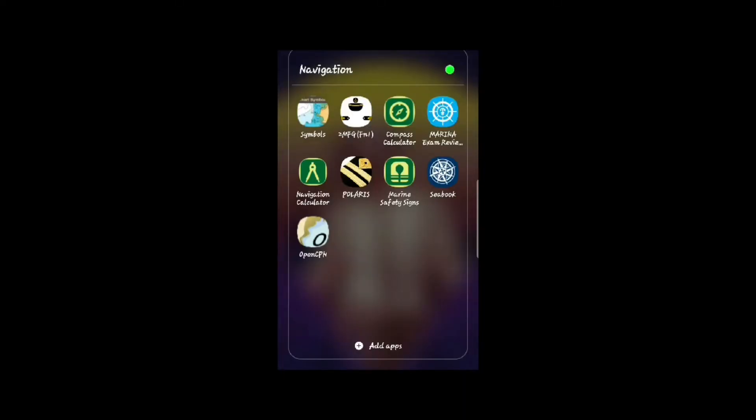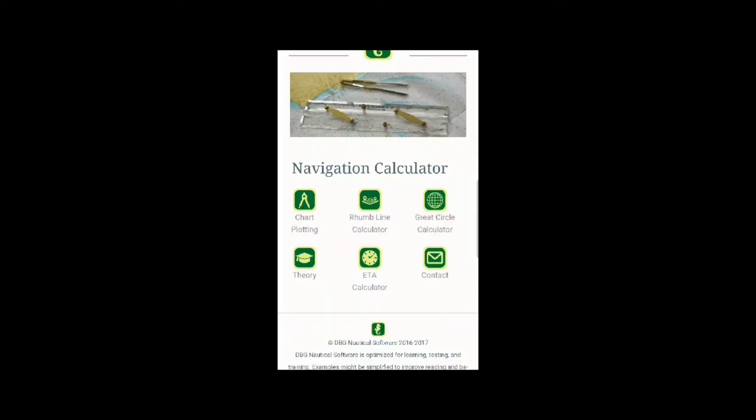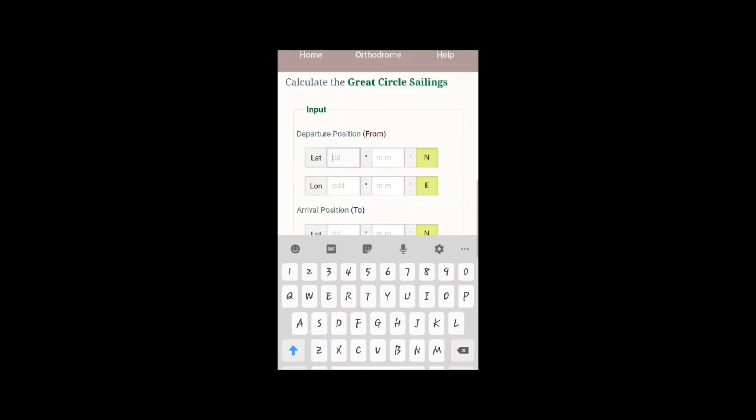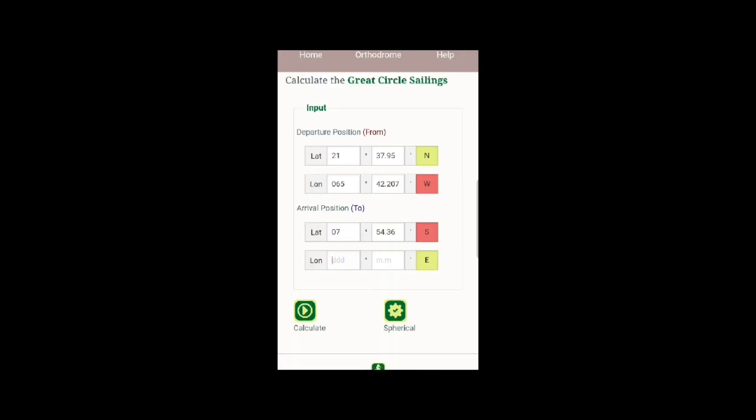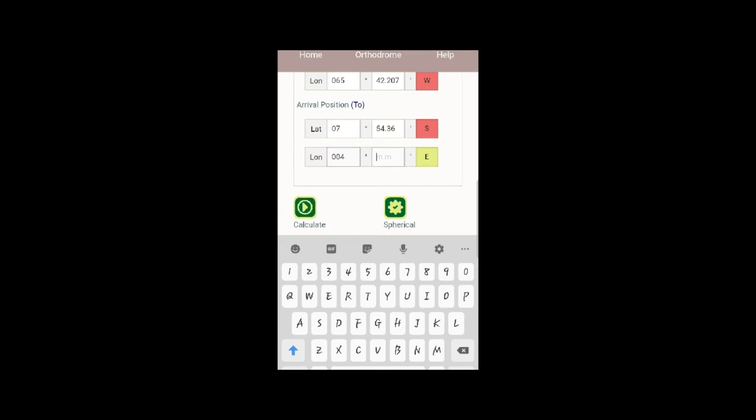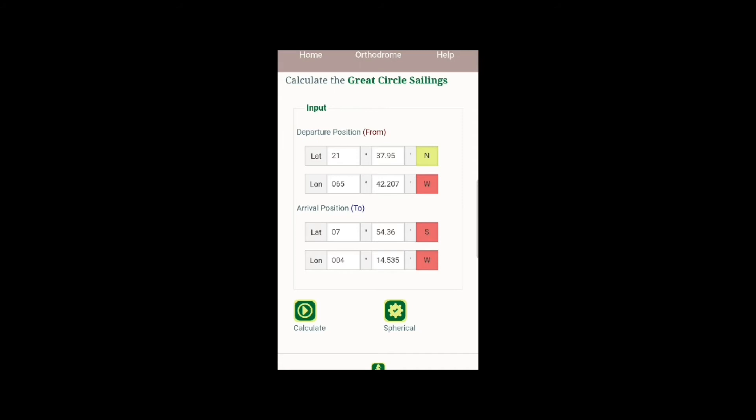We're going to use the navigation calculator app. Click on the great circle calculator. First, input latitude 1 which is 21 degrees 37.95 minutes north, and longitude 1 is 065 degrees 42.207 minutes west. Latitude 2 is 07 degrees 54.36 minutes south, and longitude 2 is 004 degrees 14.535 minutes west. Click the calculate button.